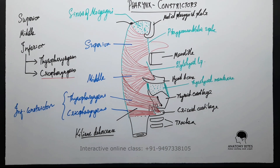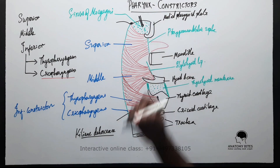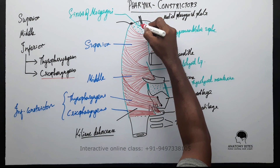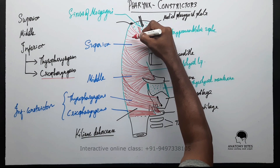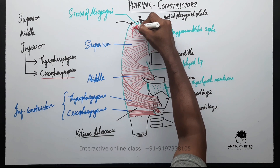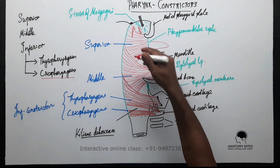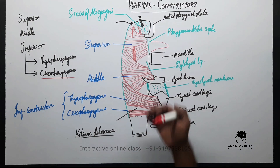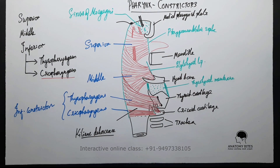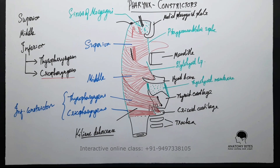There are some structures passing between these constrictors. Above the superior constrictor passes the cartilaginous part of the auditory tube, the tensor veli palatini muscle, and the ascending pharyngeal artery. The gap between the superior constrictor and middle constrictor transmits a muscle — the stylopharyngeus, which is one of the three longitudinal muscles of the pharynx — and that muscle is accompanied by the glossopharyngeal nerve, the ninth cranial nerve.